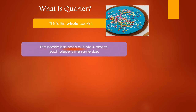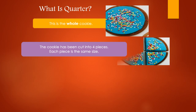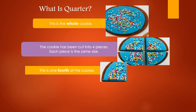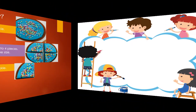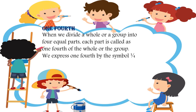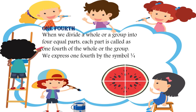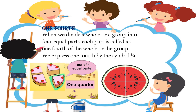Now, what is a quarter? This is the whole cookie. The cookie has been cut into four pieces — each piece is the same size. We cut it into four equal parts. This is one-fourth of the cookie. When we divide a whole or a group into four equal parts, each part is called one-fourth of the whole. We express one-fourth by the symbol one by four. You can see a watermelon and a cake each cut into four equal parts — one out of four equal parts means one quarter.